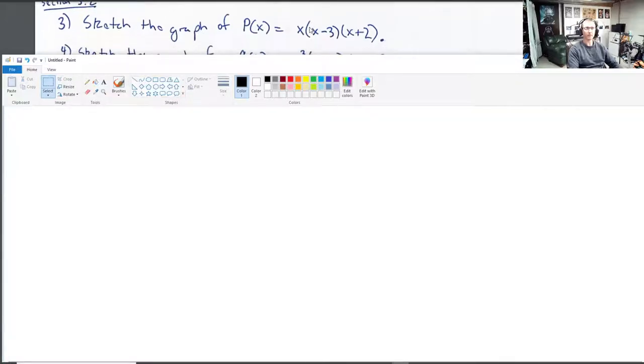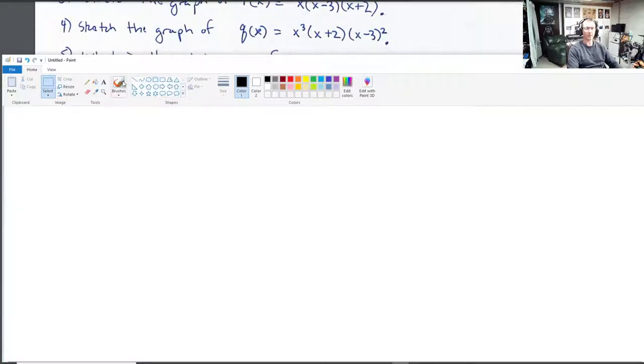Question four. Sketch the graph of q(x) equal to x cubed plus x times (x plus 2) times (x minus 3) squared. So I ask myself the same set of questions. What is the leading term? What does it look like? I see an x cubed times an x times an x squared. So what is that? X to the?